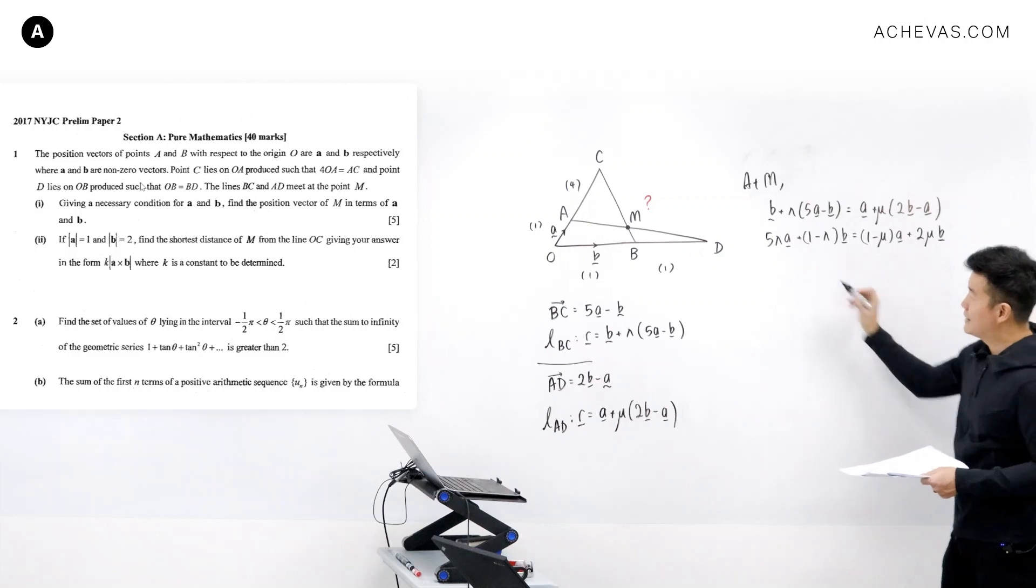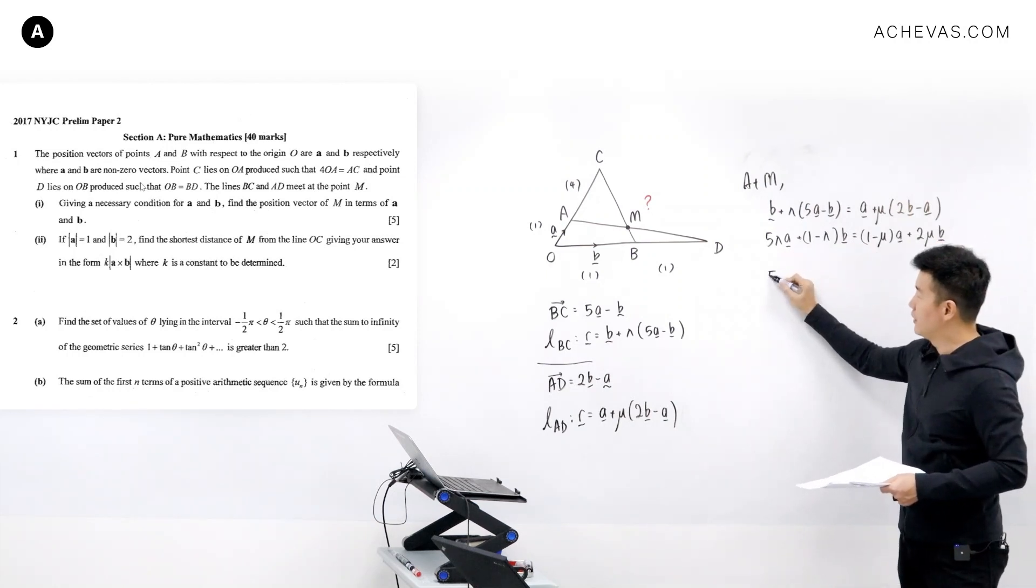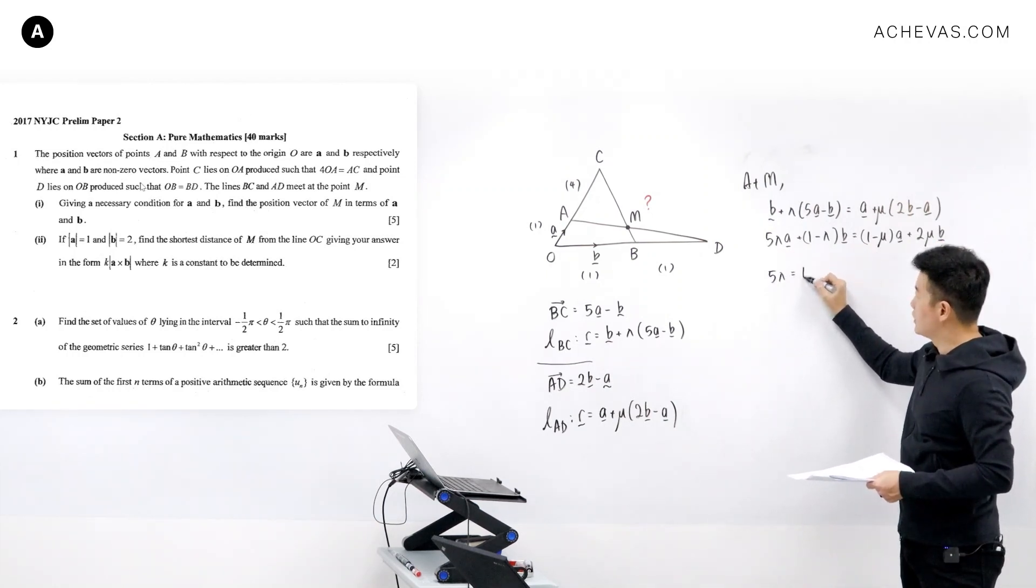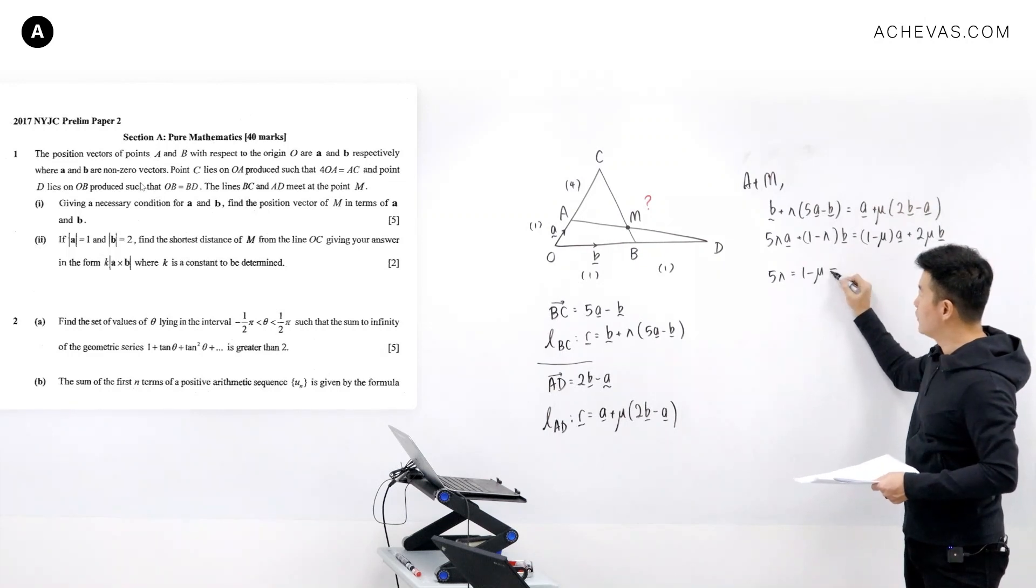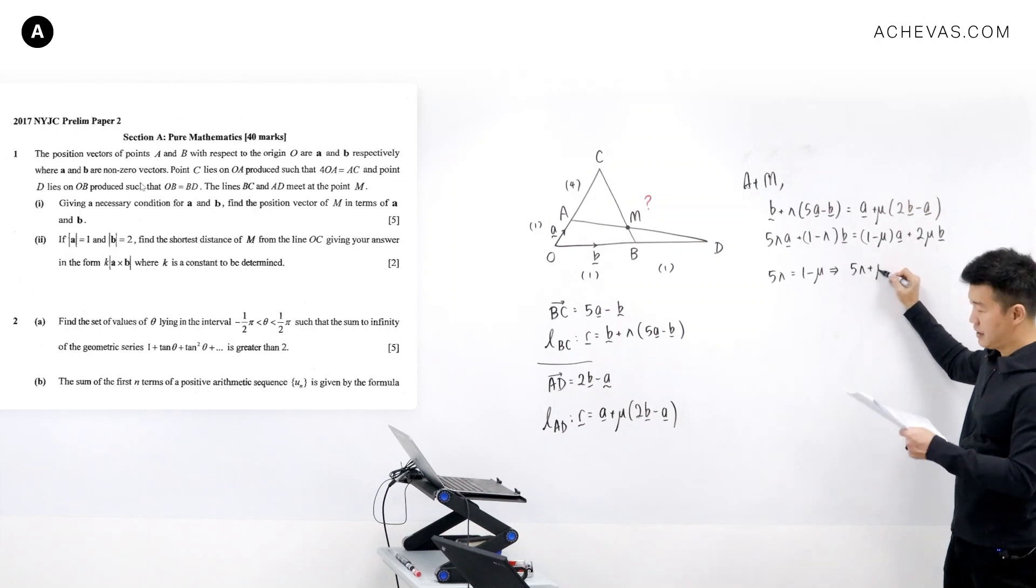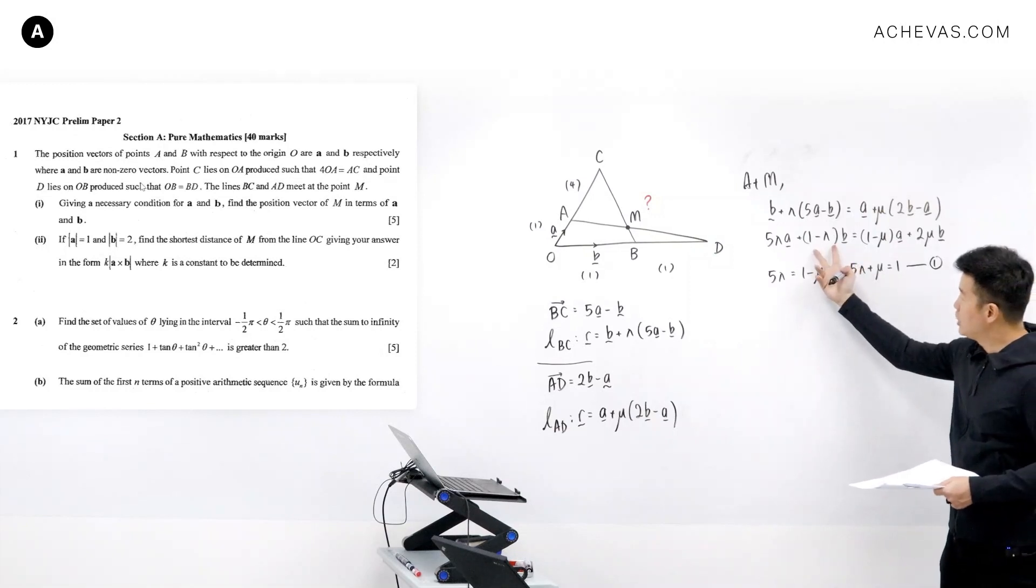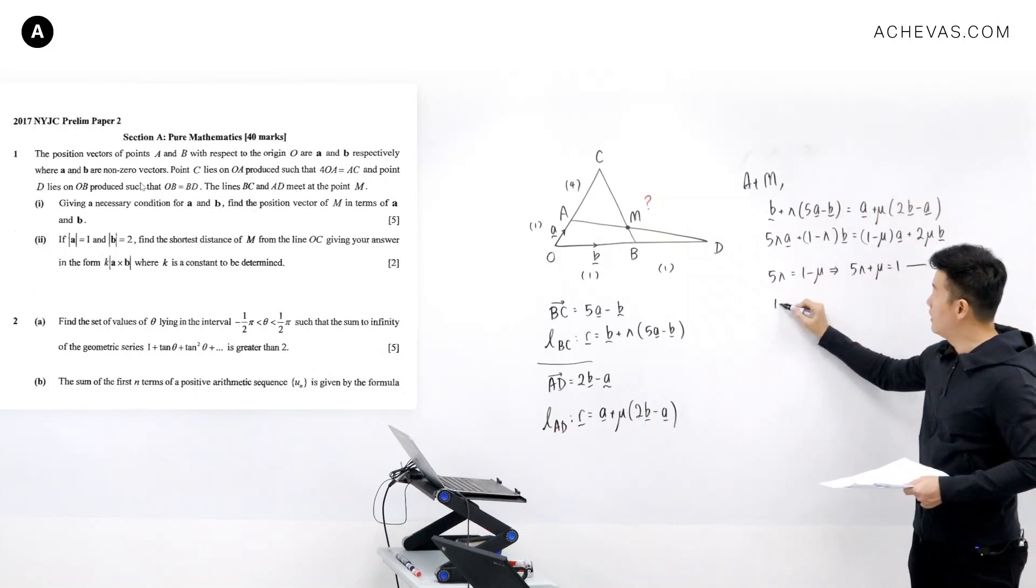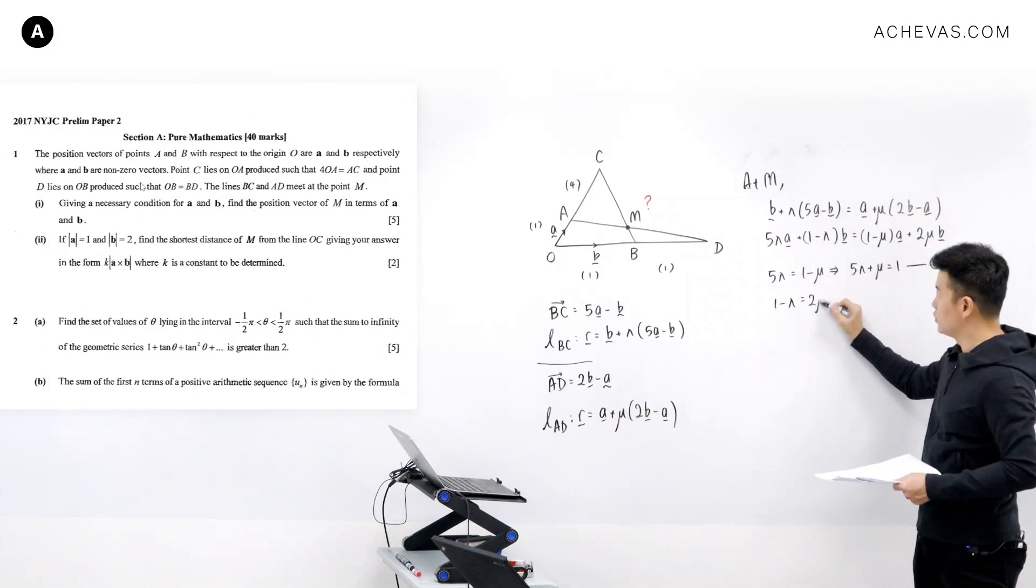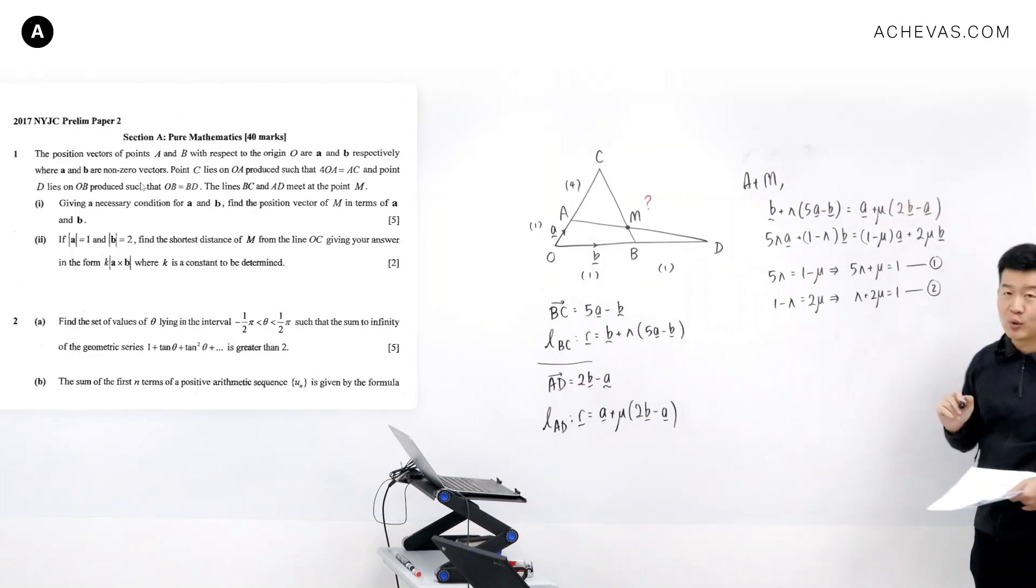And what we're going to do next is to match the coefficient to the coefficient of the corresponding vector a and vector b. So for vector a we will have 5 lambda is equal to 1 minus mu. This will give us 5 lambda plus mu is equal to 1, equation number 1. Then matching the b coefficients we have 1 minus lambda is equal to 2 mu, which gives us lambda plus 2 mu is equal to 1, equation number 2.